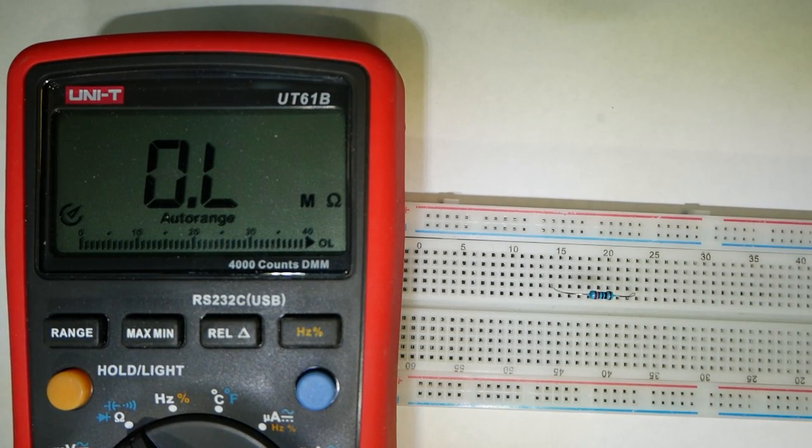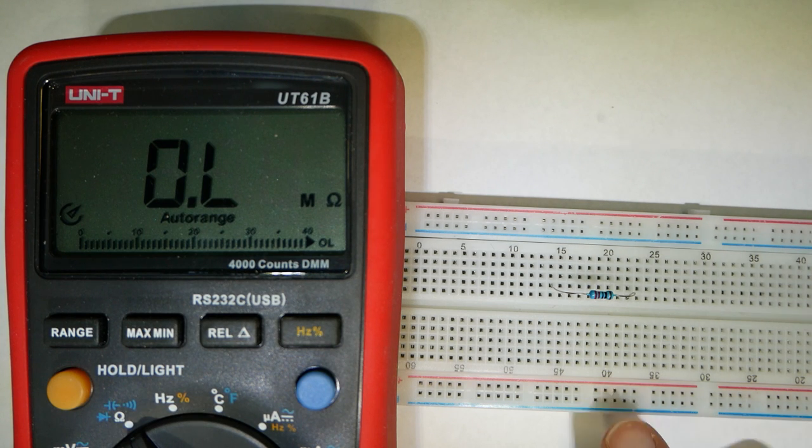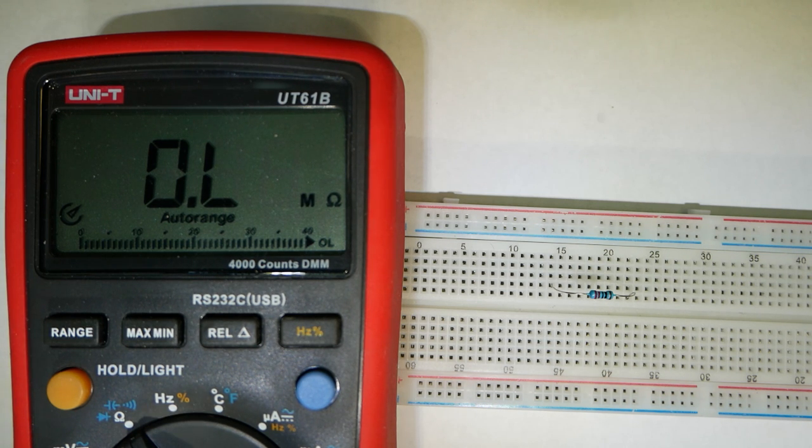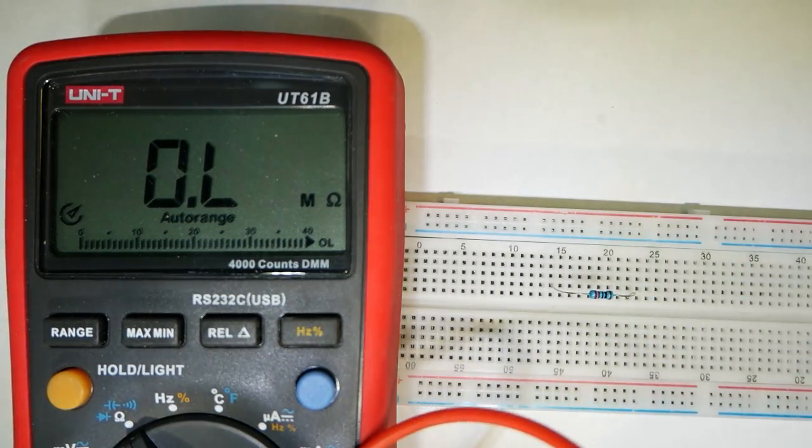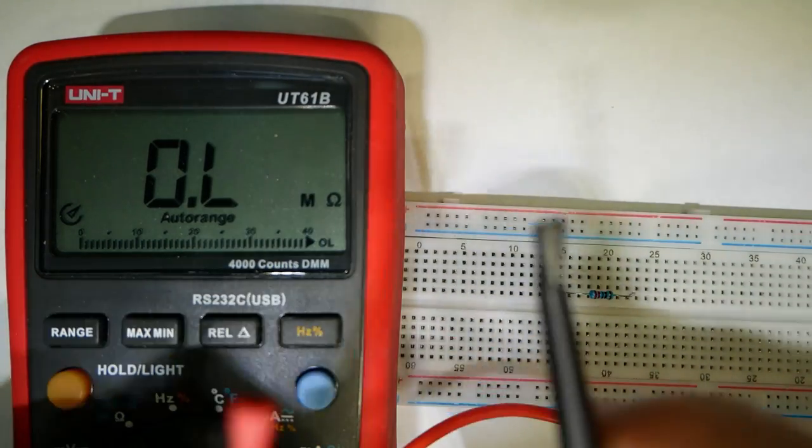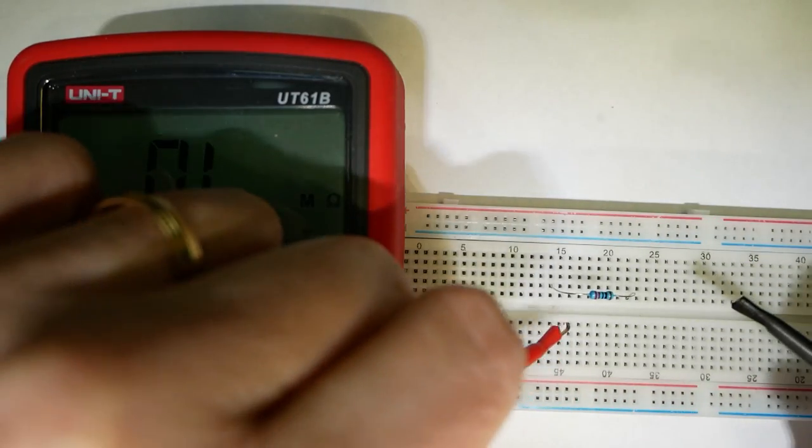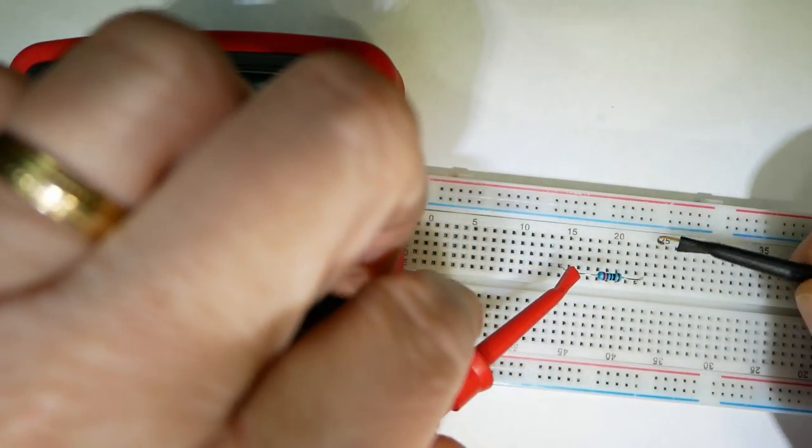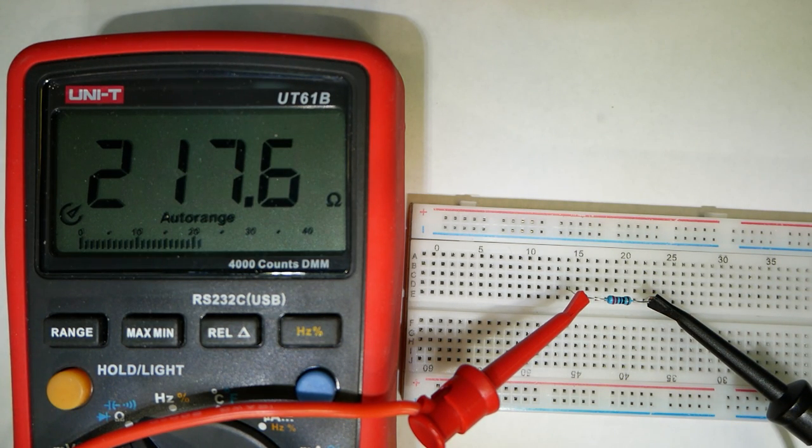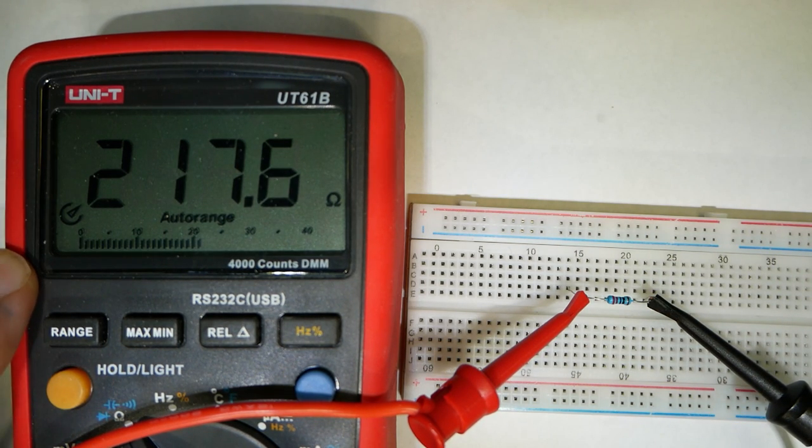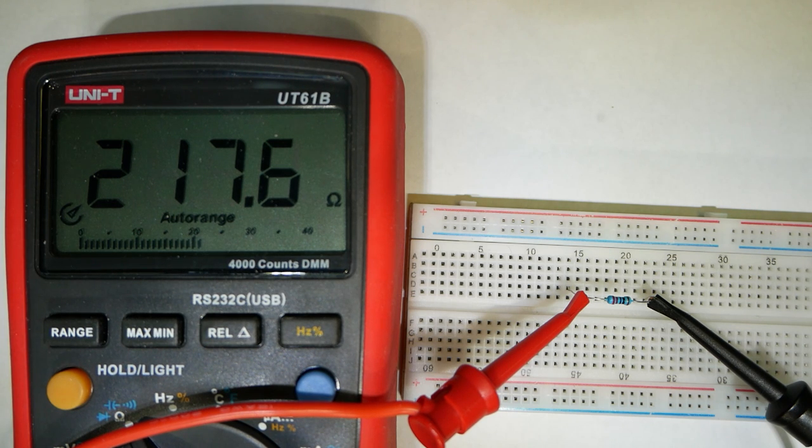So anyway, we have a 220 ohm resistor here, and let's pretend we actually don't know what its actual value is. So what we can do is we can take, in this case, a digital ohm meter and set it to ohms. And then we have the two leads, and we can just put them on both sides, doesn't matter which ones. And then one can wait for it to calibrate, and then one can see the actual resistance.